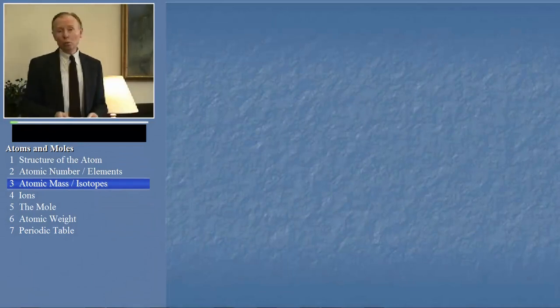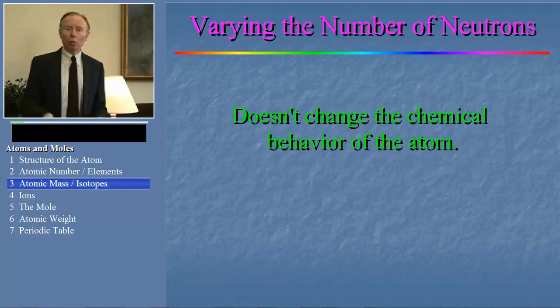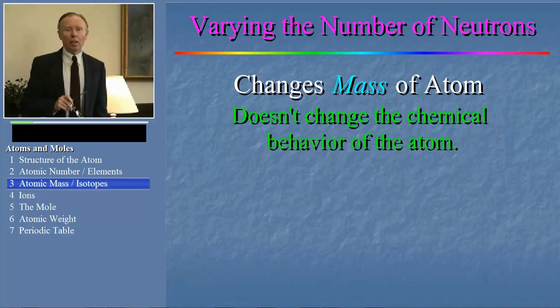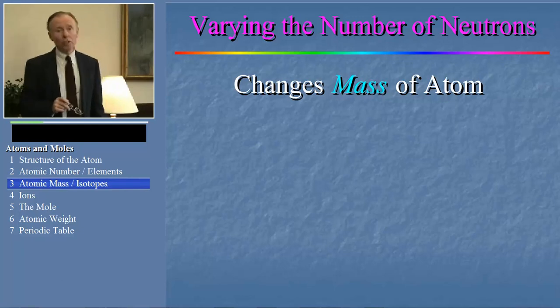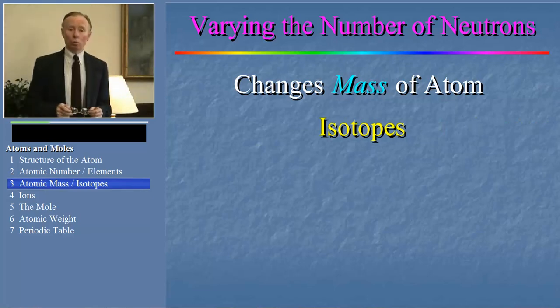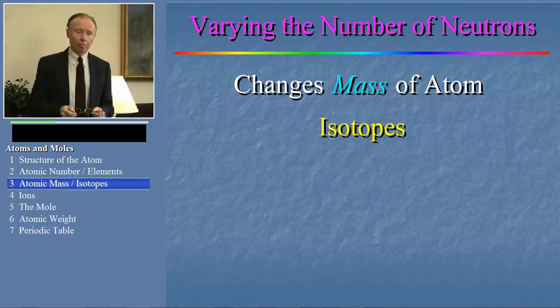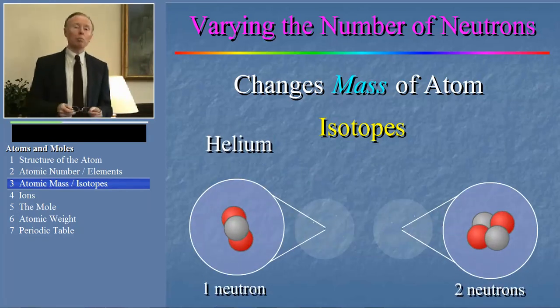What if we change the number of neutrons and keep the number of protons the same? That doesn't change the chemical properties much, we're talking about the same element. But it does change the mass of the atom. Now atoms of the same element, that is, atoms that have the same number of protons in the nucleus, but different numbers of neutrons are called isotopes. For example, a common isotope of hydrogen has no neutrons, but another has one neutron in the nucleus. A common isotope of helium has two neutrons in the nucleus, but some helium atoms just have one.